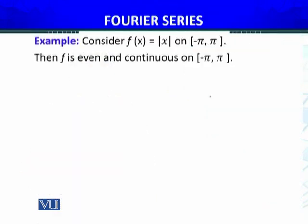Consider f(x) = |x|. Now, you know that f(−x) = |−x| = |x|. So f(x) = f(−x), in other words, the function f is an even function. For an even function, we have a Fourier cosine series, and we have to determine only aₖ — and a₀ is also part of it.